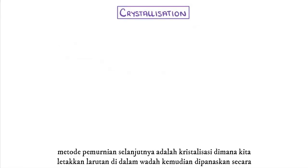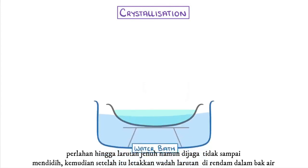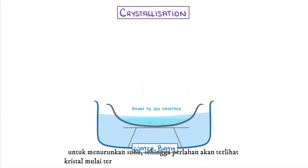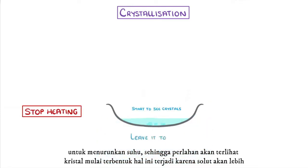The first step is still to place our solution into an evaporation dish and heat it, but this time we need to heat it more gently, so we might use a water bath instead of a Bunsen burner. Then, once some of the solvent has evaporated and you start to see crystals forming in the solution, we stop heating it and leave it to cool.